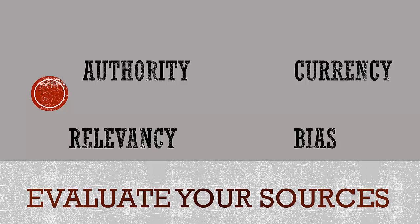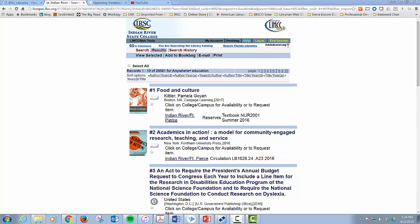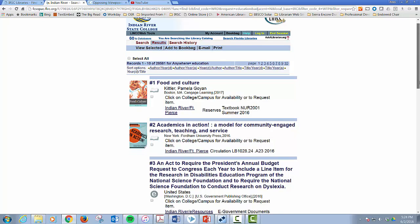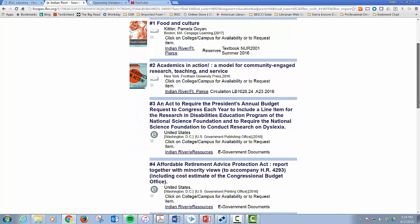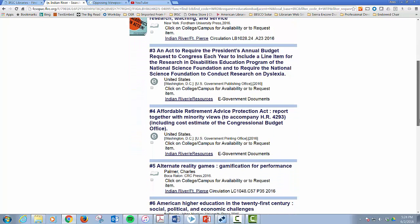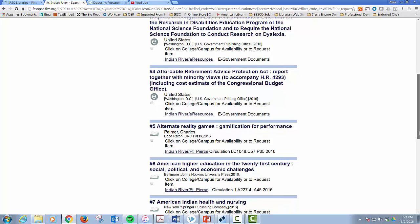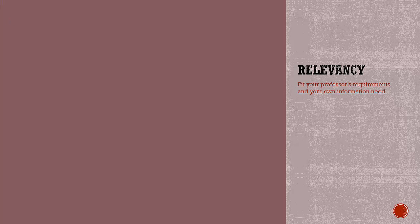Items found in the library's databases or in the print collection are considered better sources of information because these sources have been evaluated by librarians before adding them to the collection. The librarians at IRSC carefully select each item added to the library based on the classes that are offered at the school.